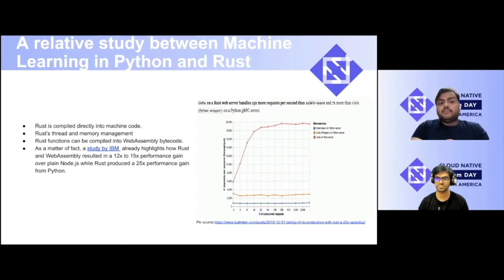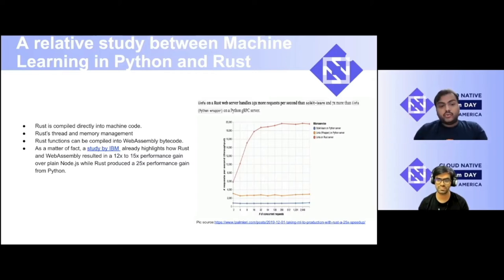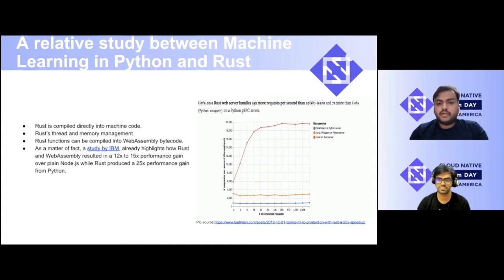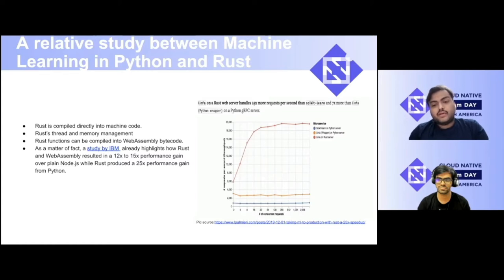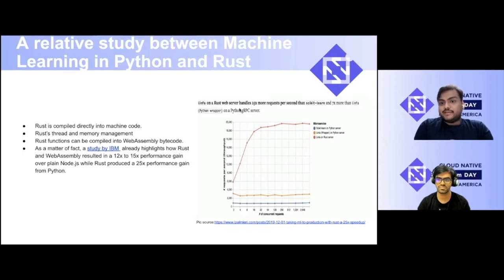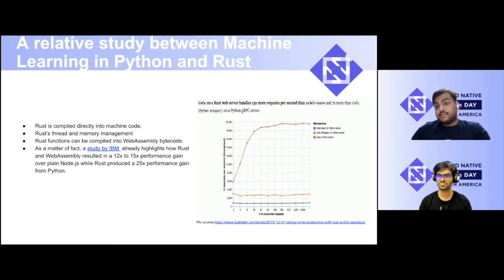A study by IBM already highlights how Rust and WebAssembly together have resulted in 12 to 15x performance gain over not only plain Node.js, but also a 55x performance gain over Python. And there is one library in Rust called Linfa. In spirit, it is similar to scikit-learn but written in Rust. Looking at the graph, Linfa on a Rust web server handles 25 times more requests per second than scikit-learn and 7 times more than a Linfa Python wrapper on a Python gRPC server.